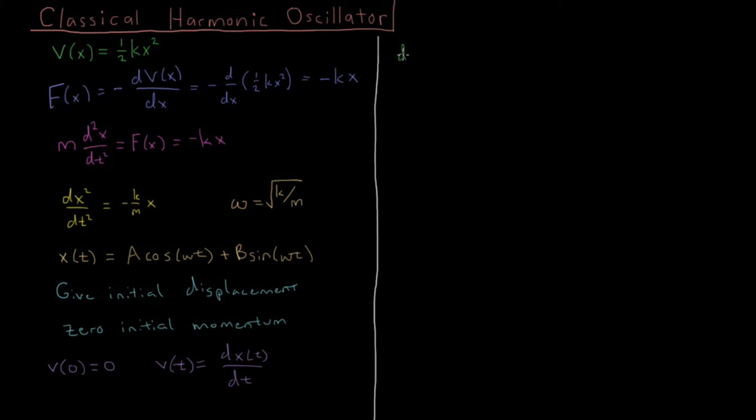If we have the derivative with respect to time of our trajectory function x of t, then that equals, the first term gives us minus A omega sine omega t where t is zero, so sine of zero...